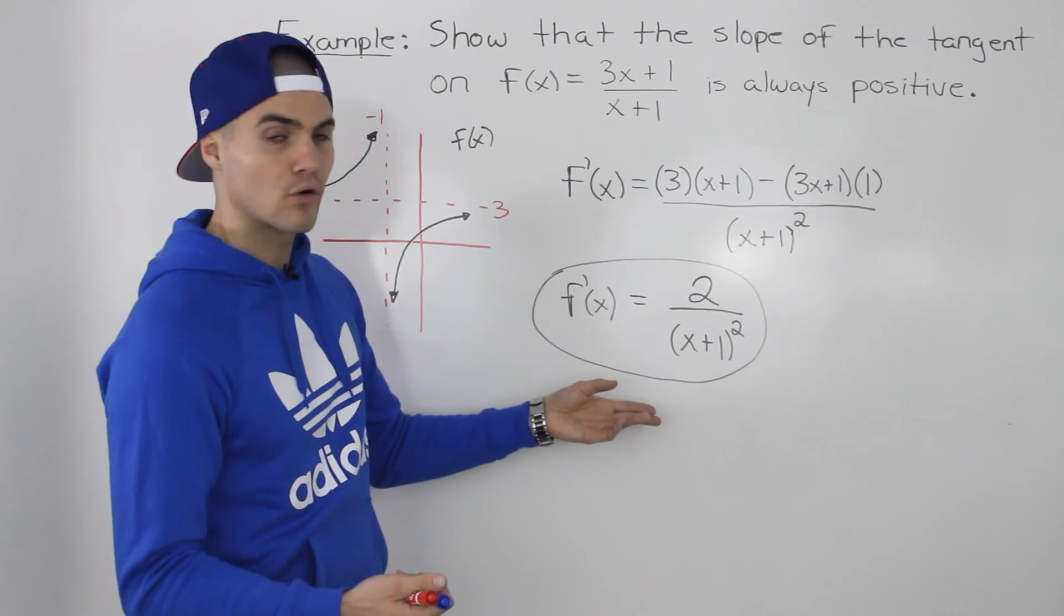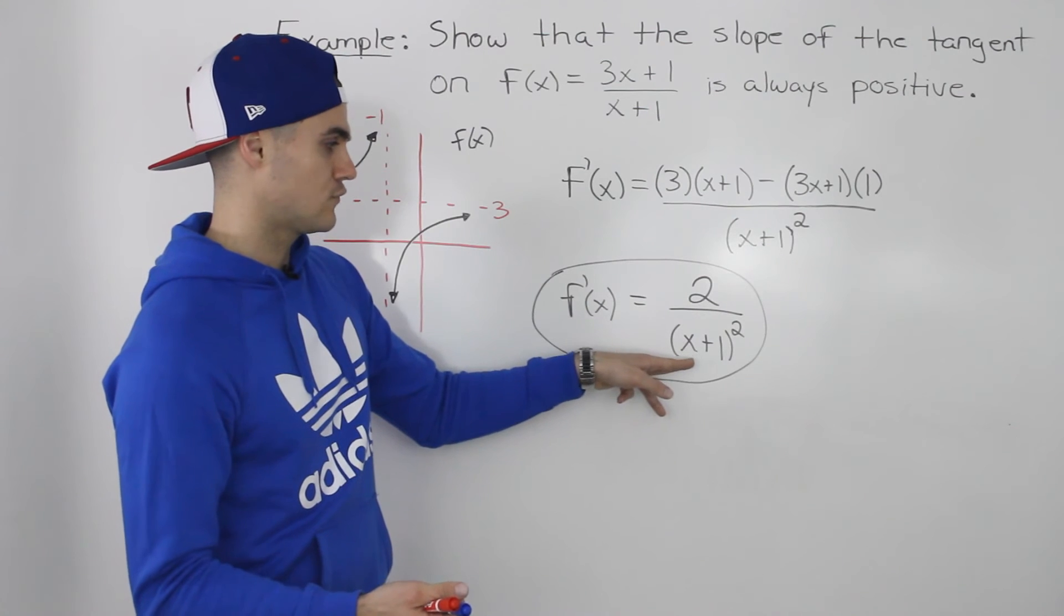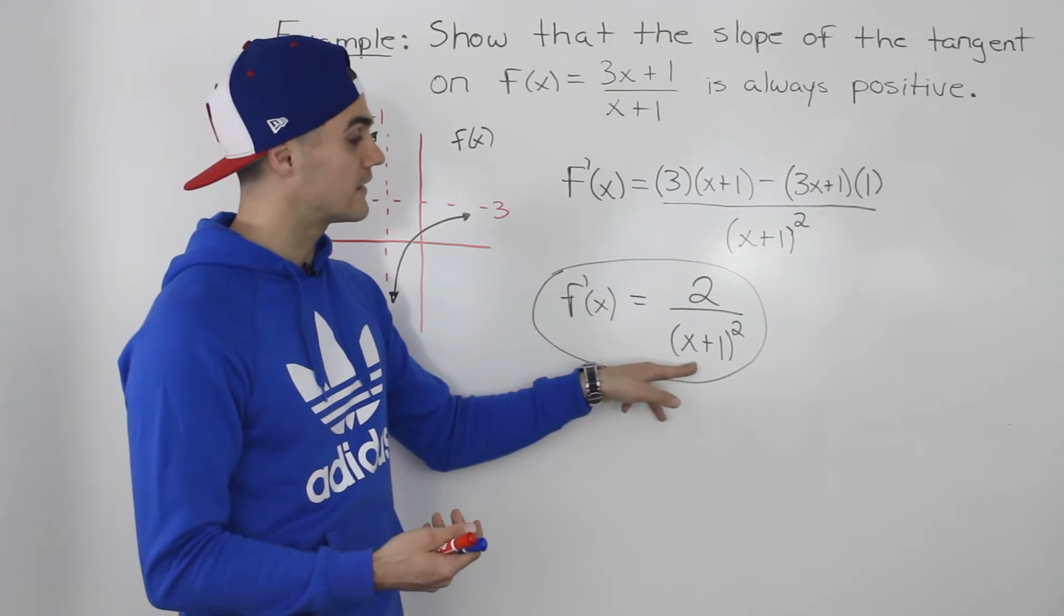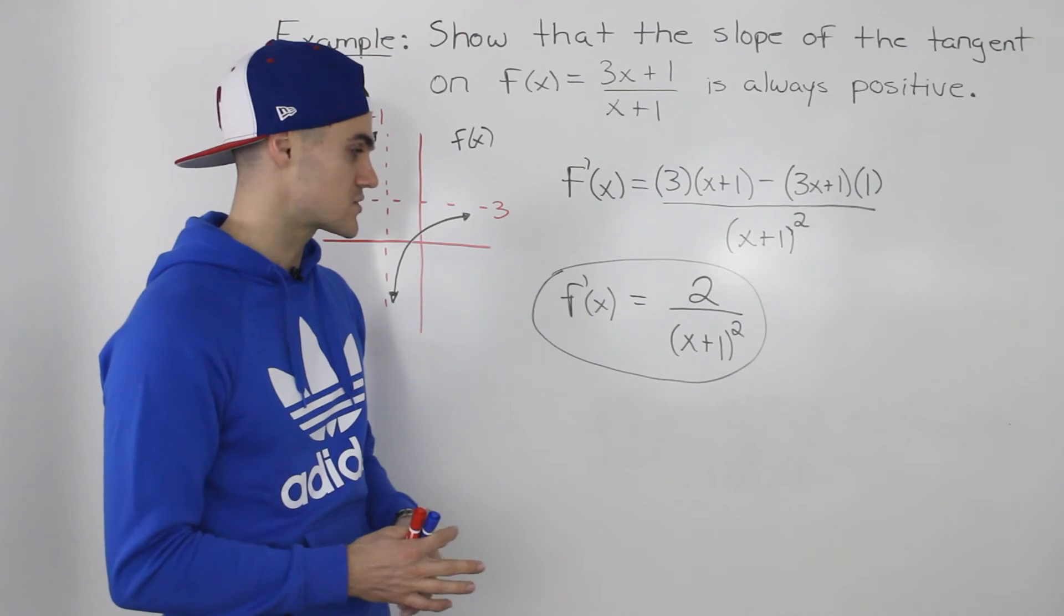but let's plug in an x value where the bracket will be negative. So let's plug in -4, for example. If we plug in -4 for x, -4+1 is -3, and (-3) squared is 9. So 2/9 is positive as well.